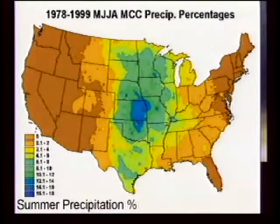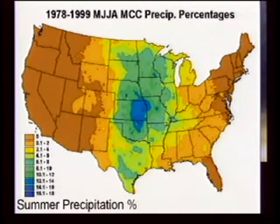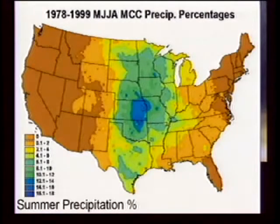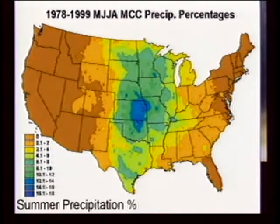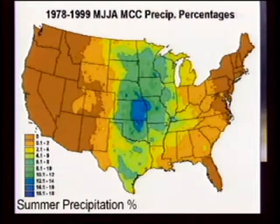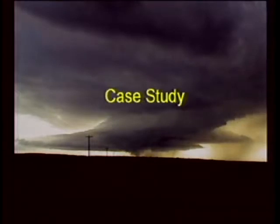Summer precipitation — May, June, July, and August — this is the growing season when we're growing corn, soybeans, and wheat. Look at these percentages: almost 20 percent of precipitation comes from MCCs. So if we have a year in which we get a sudden decrease in the number of MCC events, maybe cut in half, we don't want to lose almost 10 percent of our summer precipitation. That could be devastating to the wheat belts, to the corn belts, and so on. Tremendous amounts of precipitation are provided by these MCCs.